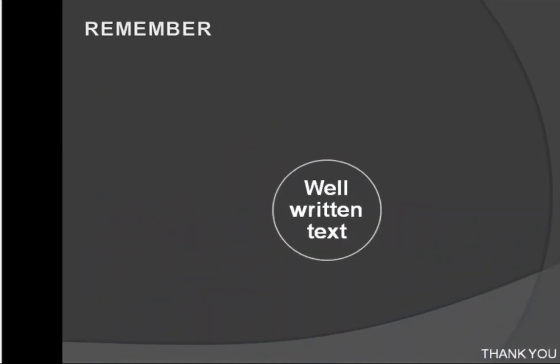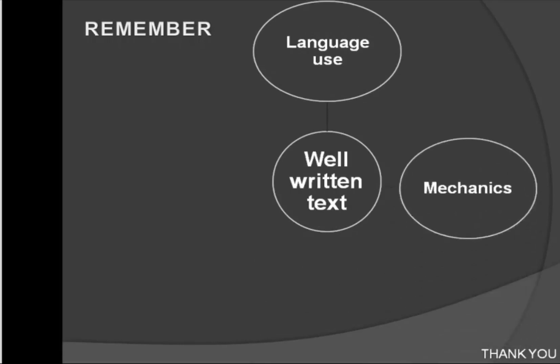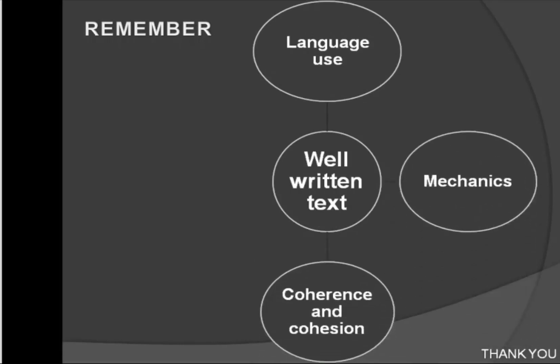Remember, well-written texts are examples of effective writing. They affect us in many ways because the messages they impart are clear, well-developed, and coherent. Well-written texts are not accidental, but the result of a carefully planned and elaborate process of writing. Thank you, students, and see you next time.